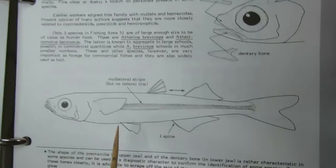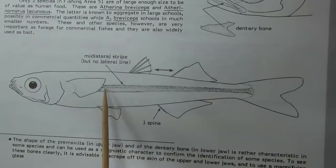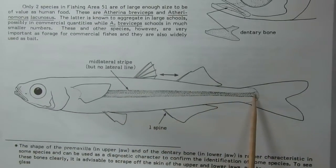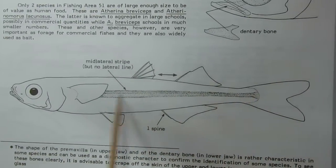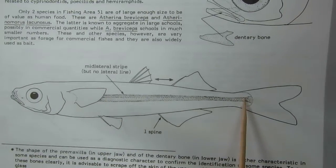Next is Atherinidae. The lateral line is absent, but a mid-lateral stripe is present. So here the stripe is present while the lateral line itself is absent.